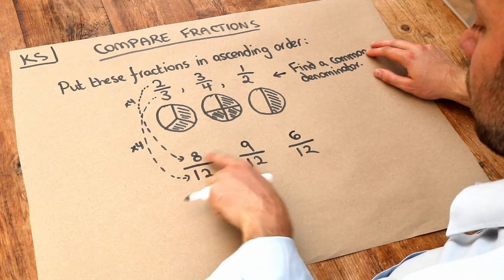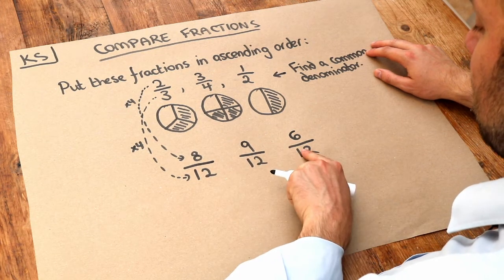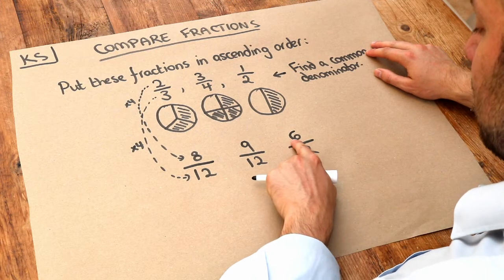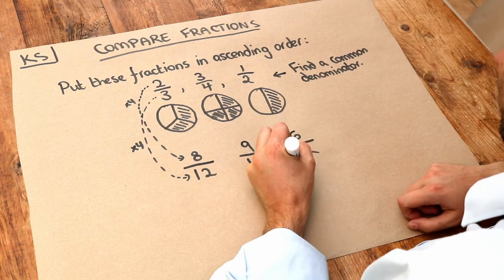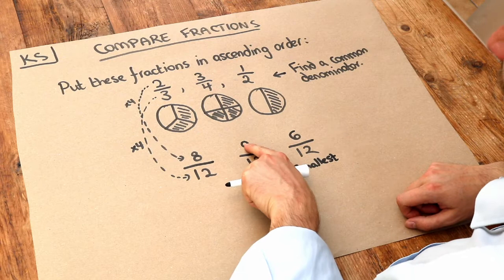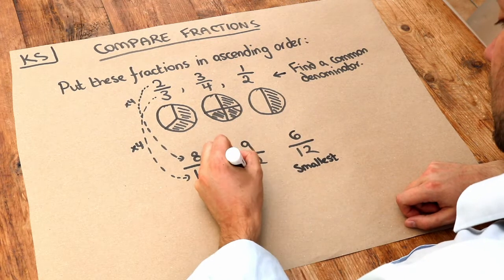So here we have eight-twelfths, here we have nine-twelfths, and here we have six-twelfths. Now clearly, six-twelfths is the smallest, and nine-twelfths—because nine is the largest of nine, eight, and six—that is the largest.